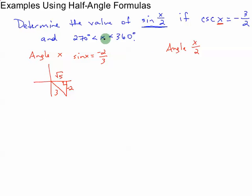x over 2, well, x is between 270 and 360. So if I divide all three sides of this by 2, x over 2 would be between 135 and 180. So if I draw a picture of that, here's 135, here's 180, so angle x over 2 is here. So that's everything we know. Now let's figure out what I need to find.